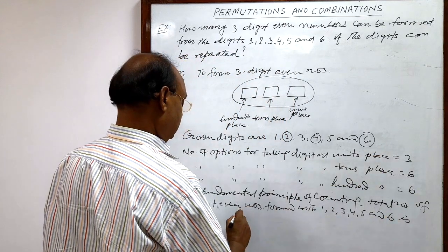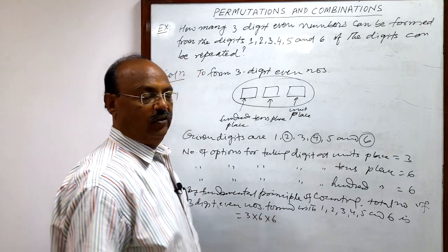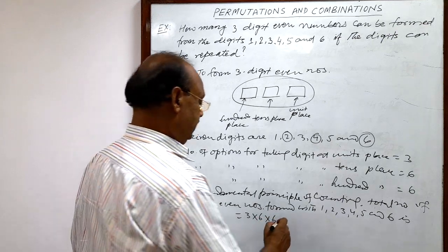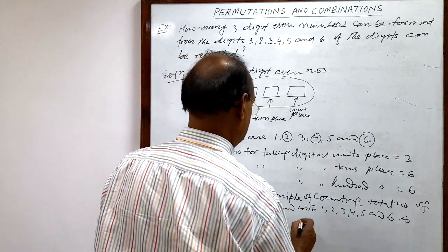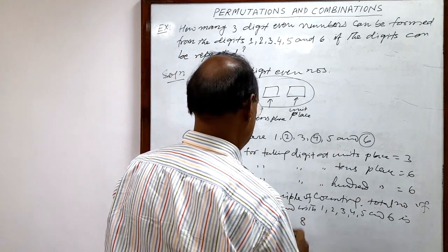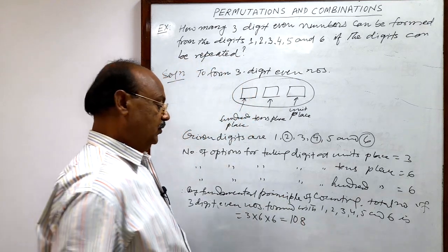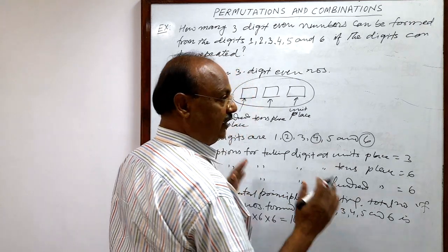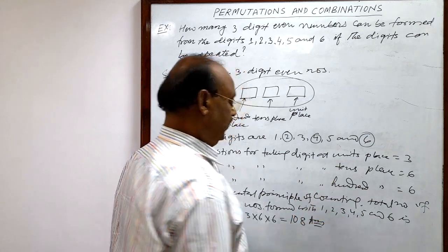We have to multiply this. Three into six into six. We will get the option. So multiply it. One hundred and eight. So total number of three digit even numbers is one hundred and eight.